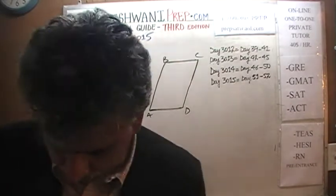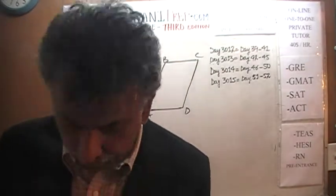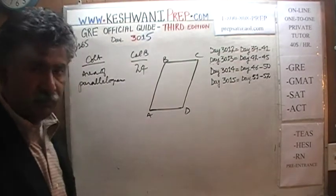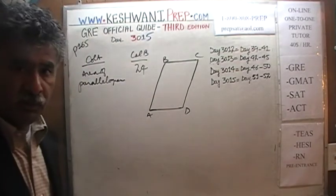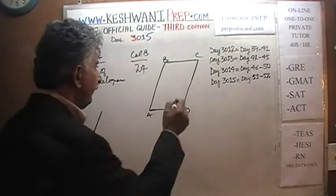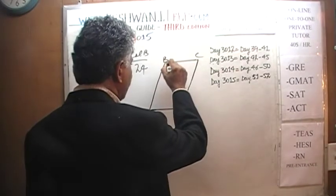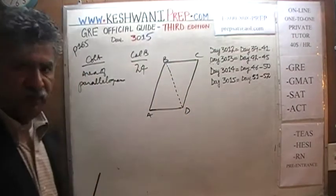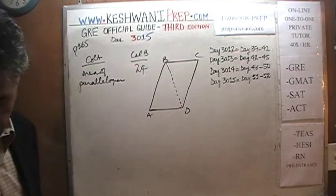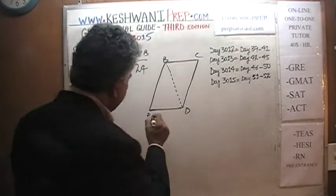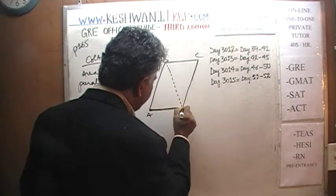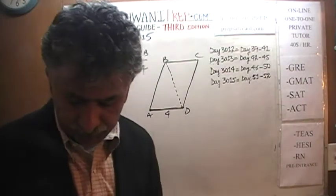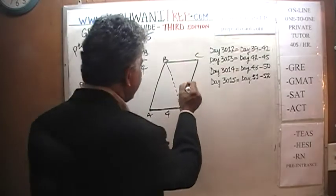To understand the area of the parallelogram, let's first consider triangle ABD. We are told the base is 4 and this side is 6. How do we figure out the area of this triangle?